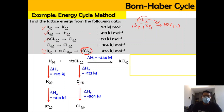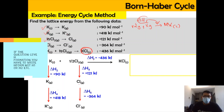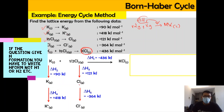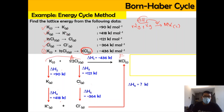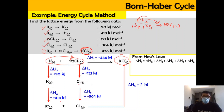You can label the enthalpy steps as H1, H2, H3, H4, and H5. If the question specifies using HA or HF notation, you should use that notation accordingly. We are already done with all these steps, but as mentioned, we need to find the lattice energy — from K⁺ gas and Cl⁻ gas forming ionic solid — so we need to add another arrow for that. According to Hess's law, delta H1 is equal to the sum of delta H2 plus H3 plus H4 plus H5 plus H6.